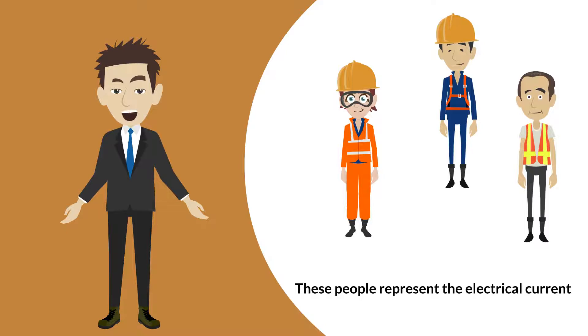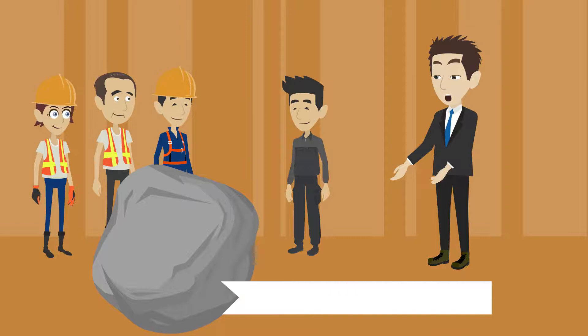We'll use a team of workers as an example. The people represent the electrical current, amps, flowing in the circuit.